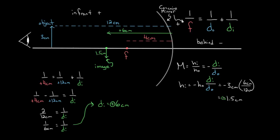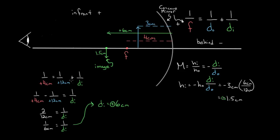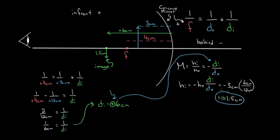That's an example using a concave mirror. What would change if we moved the object inside the focal point — say, to three centimeters instead of 12? Everything works the same way: you just plug in positive three for the object distance instead of positive 12. The mirror equation works exactly the same. You solve for the image distance, and whatever you get tells you where the image is. Then plug that into the magnification equation to find the image size and orientation.